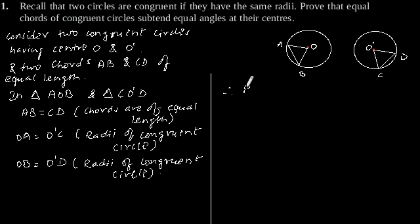Therefore, by SSS congruence rule, triangle AOB is congruent to triangle CO'D.